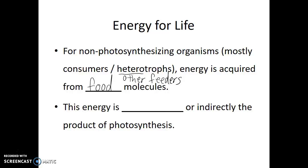As we eat food and get energy from it, the energy we are receiving is either directly or indirectly the product of photosynthesis. If you are eating an apple, a carrot, or a salad, that energy came directly from plants performing photosynthesis. If you are eating a bacon cheeseburger, the energy from the meat and cheese came from those organisms eating plant material or eating other animals who had consumed plant material. Eventually it all goes back to photosynthesis as the source of energy in our food, even if there are a few steps in between.